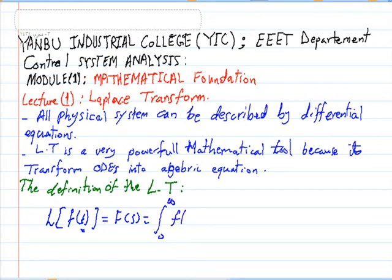Whereas s will equal σ + jω. s is a complex variable because it contains a real component and an imaginary component.